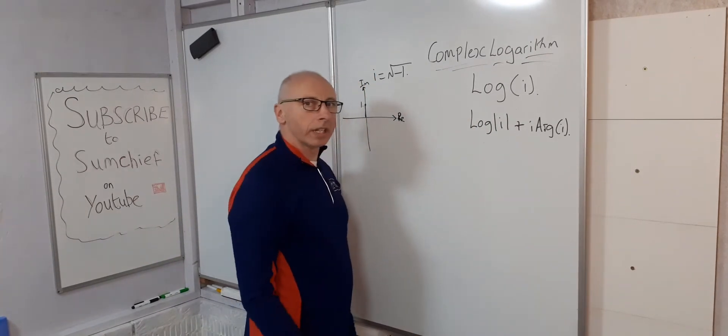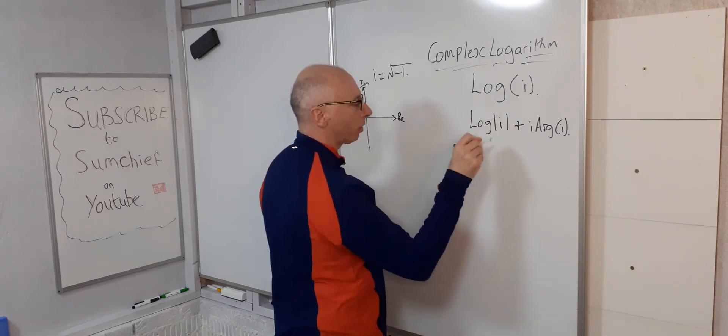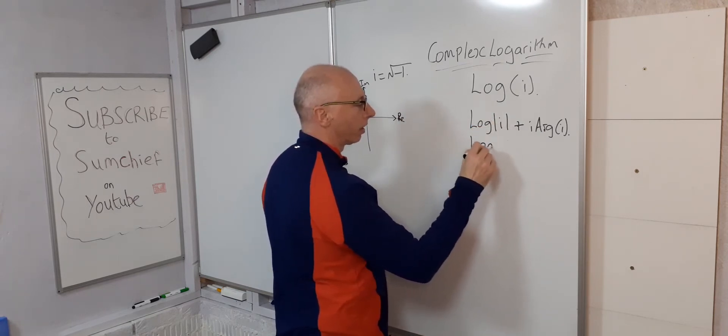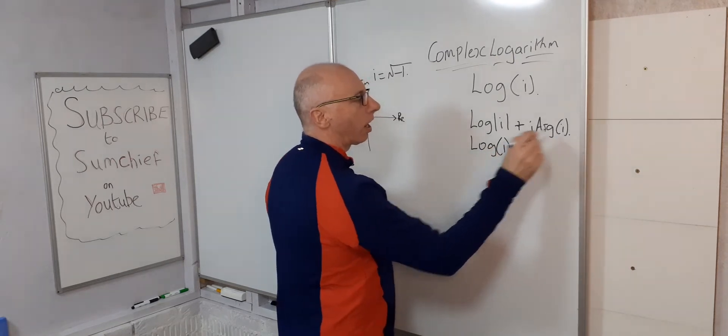So as we know, one is a positive number. We don't need the straight brackets. We can just put normal brackets. So log of one plus i argument of i.